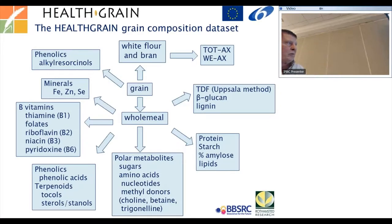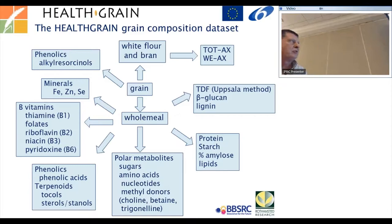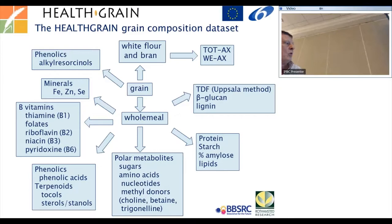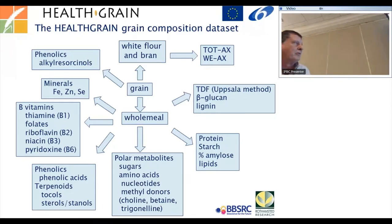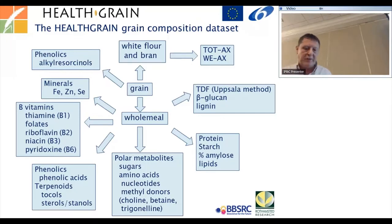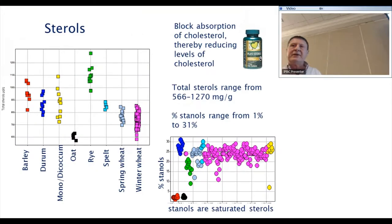We sent material all over Europe to partner labs. This is all wet chemistry — time-consuming — mainly using mass spectrometers or NMR, and a lot of HPLC work. The components analysed include B vitamins, phenolics, NMR polymetabolites, major components, dietary fibre, and various fractions. I'll give you some data sets for some of these components and try to bring them together into multivariate studies.